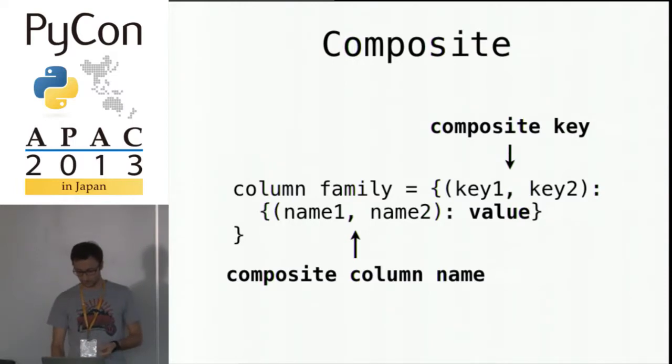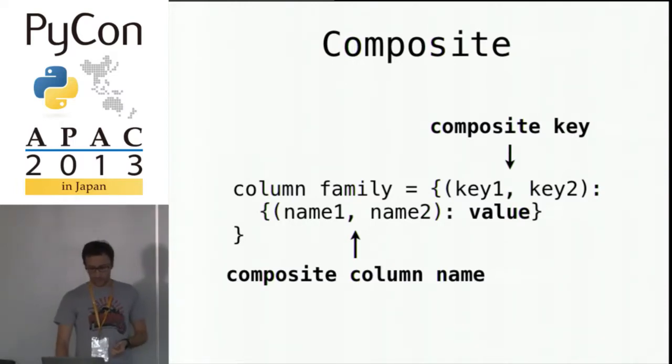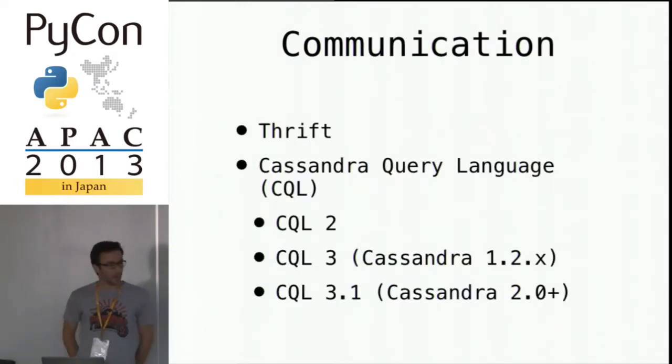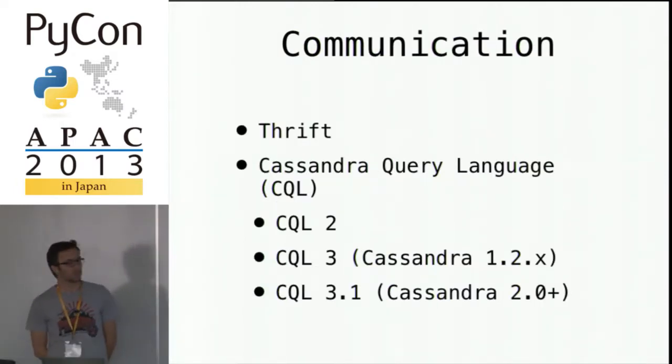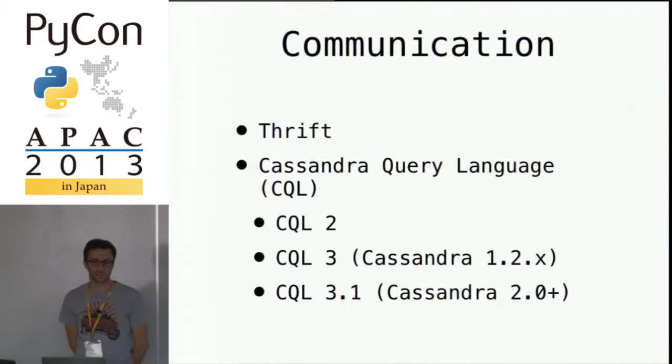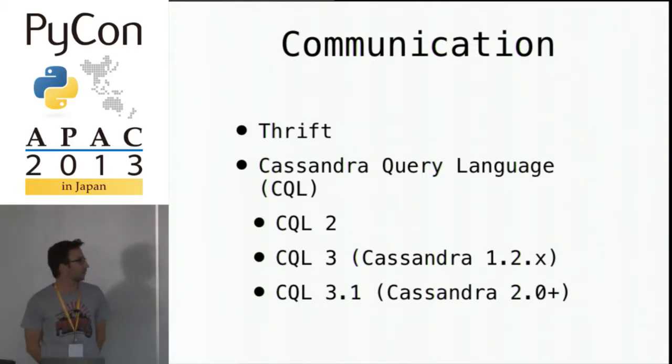This gives us the interesting property of being able to have composite keys — either for the row key or for the column name. Basically a key can be a concatenation of different data types. We'll see that later, but it's useful for clustering and ordering your data directly in the database.